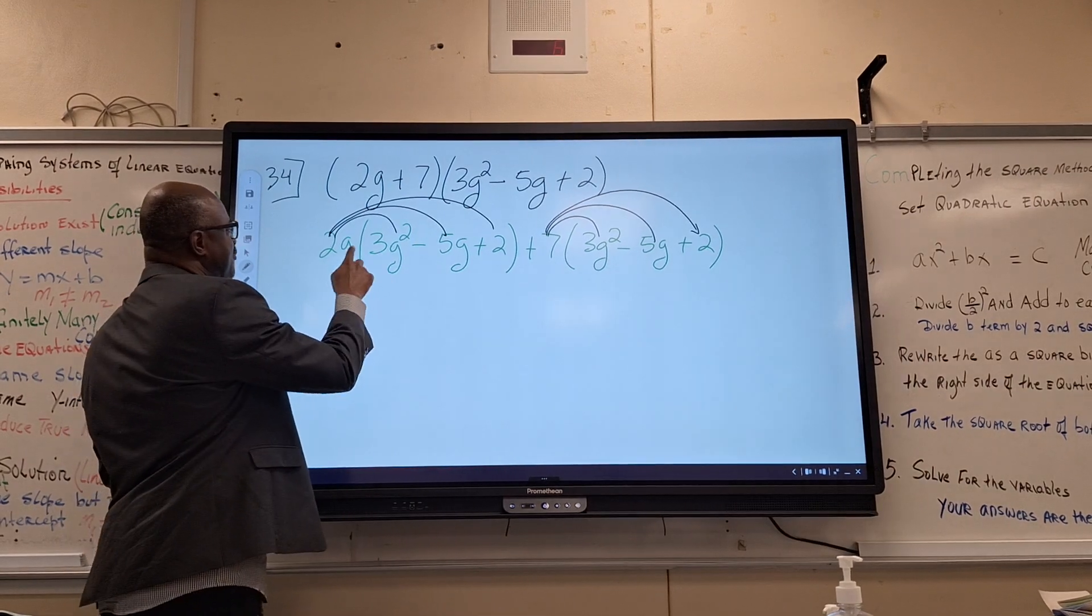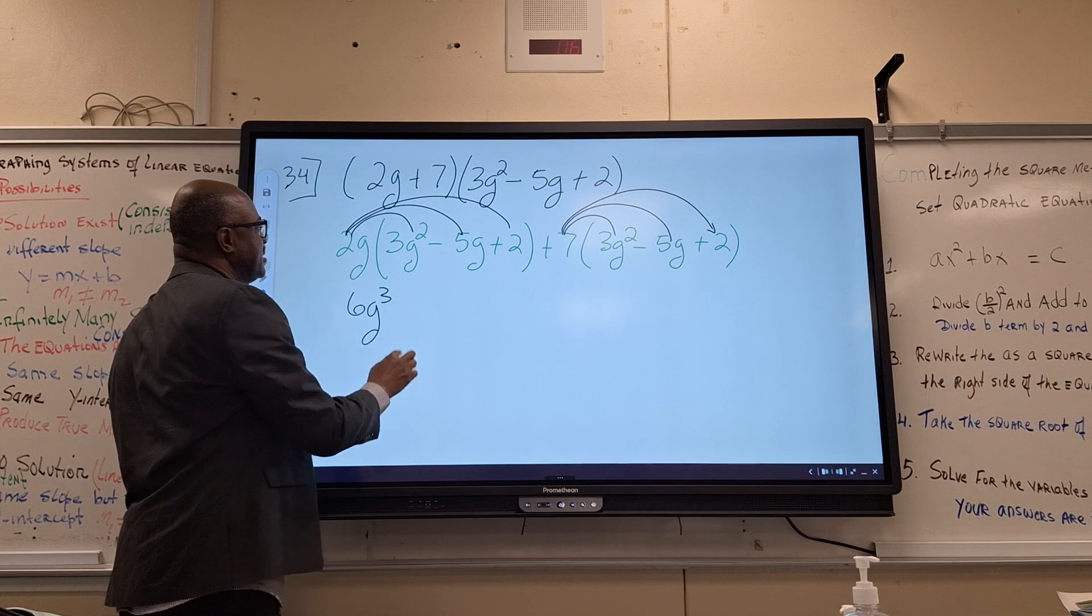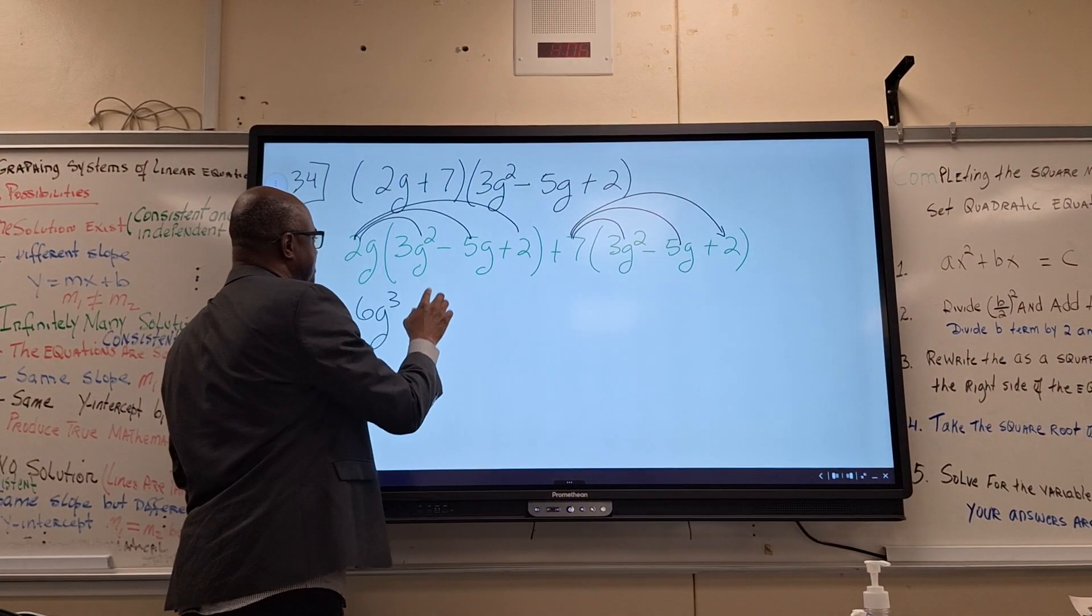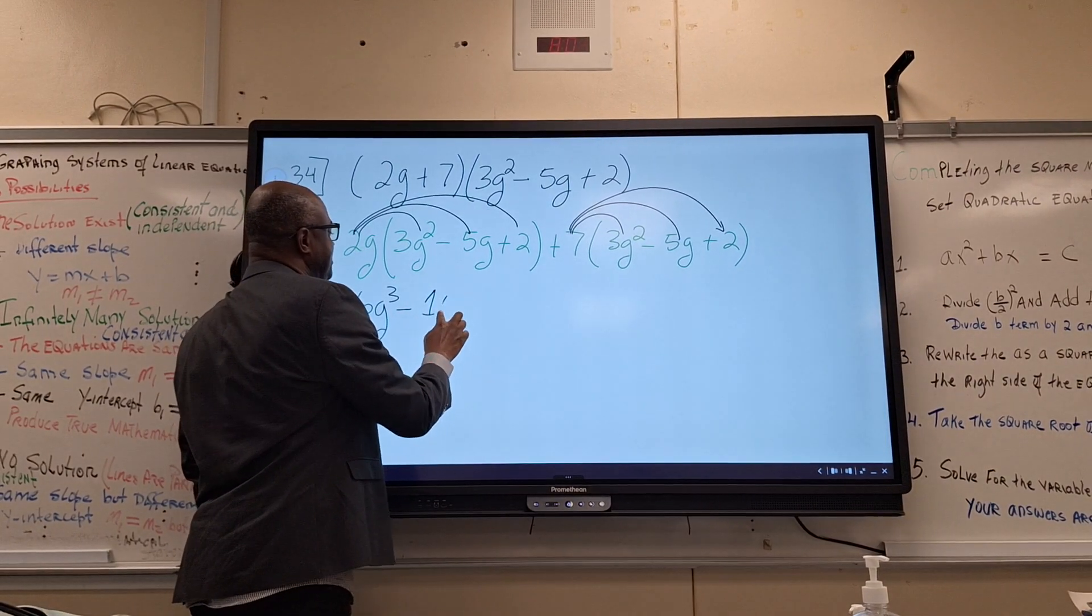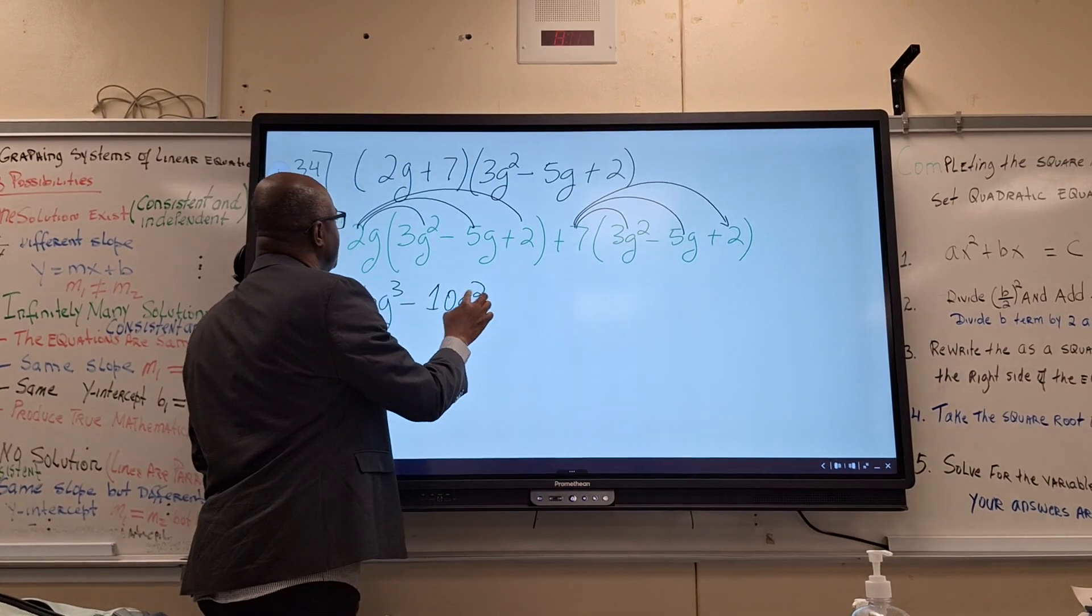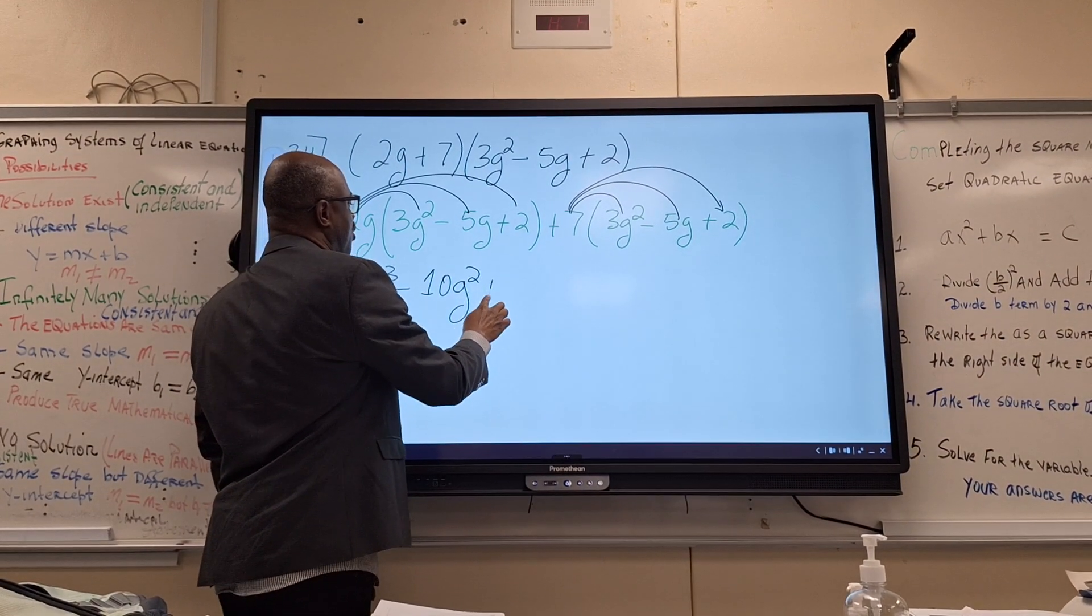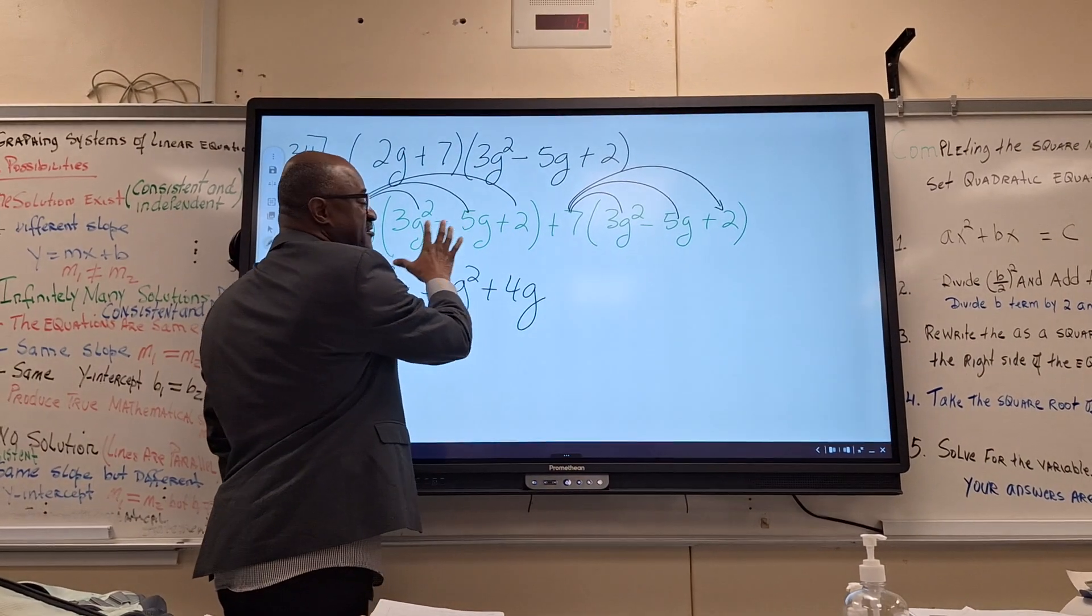this will give you 6G cubed, exactly. 2G times minus 5G. Minus 10G. That will give you minus 10G squared. And 2G times 2 is plus 4G. We're done with the first distributive property.